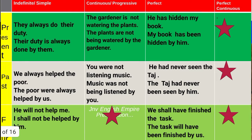First example: 'They always do their duty.' 'Their duty' is your object — it is taken in the beginning as a subject. 'Their duty is always done.' The rule applicable is present indefinite, so it will be is/are/am plus third form of verb. 'Always' is taken as usual, and 'they' is changed into 'by them.' You can pause the slide and see all the columns one by one.